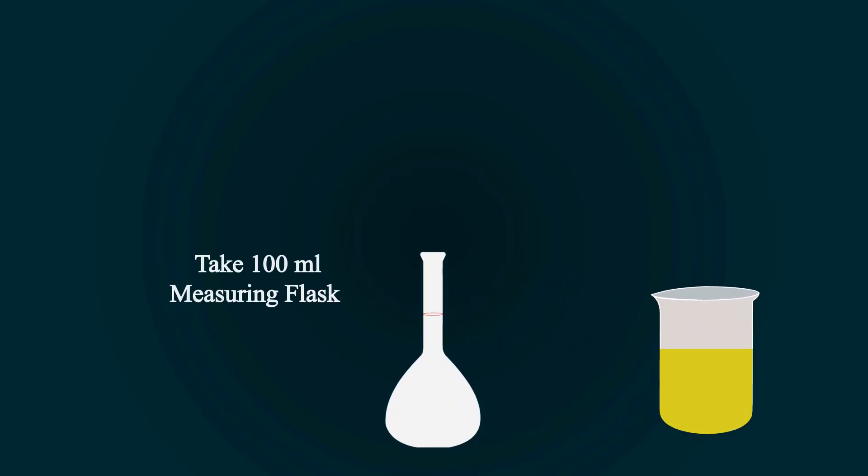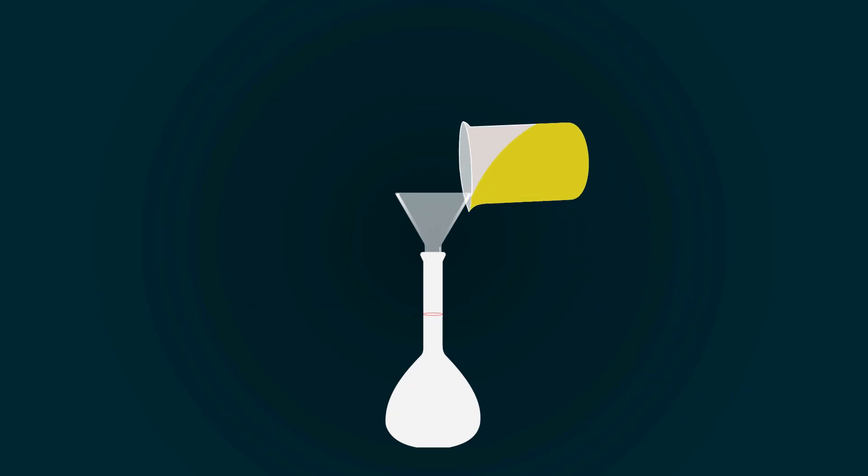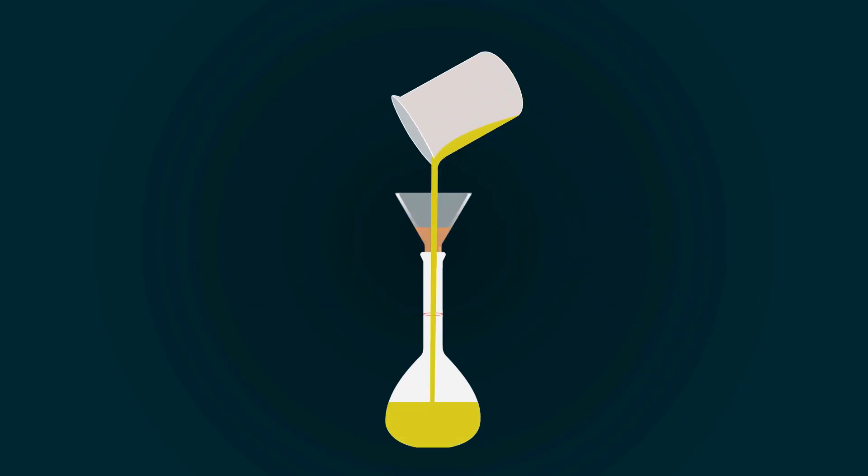Now take a volumetric flask of 100 milliliters and put a funnel on the top of the flask. Pour all the solution into the volumetric flask. You have to fill it up to the 100 milliliter point.